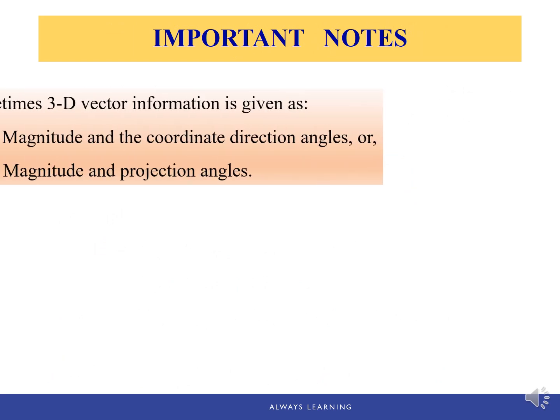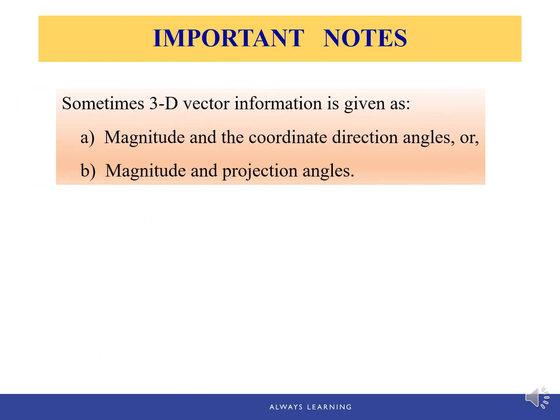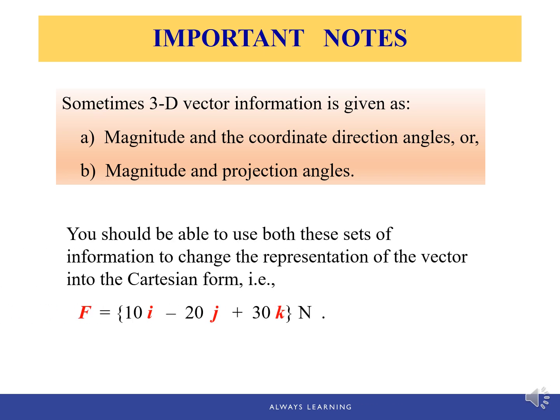It's important to know that in most cases, 3D vectors are not given in component format directly. In a lot of cases, vector information is given either as magnitude and coordinate direction angles, or magnitude and projection angles. So you are going to use trigonometry to change the representation of the vector into Cartesian form, and then perform the addition or subtraction.